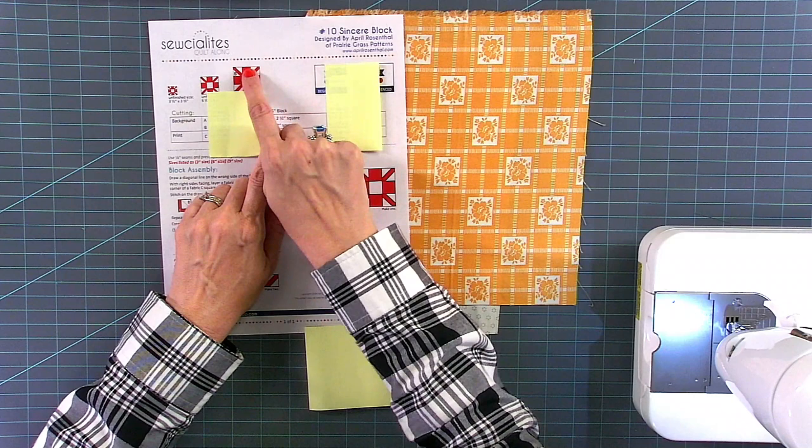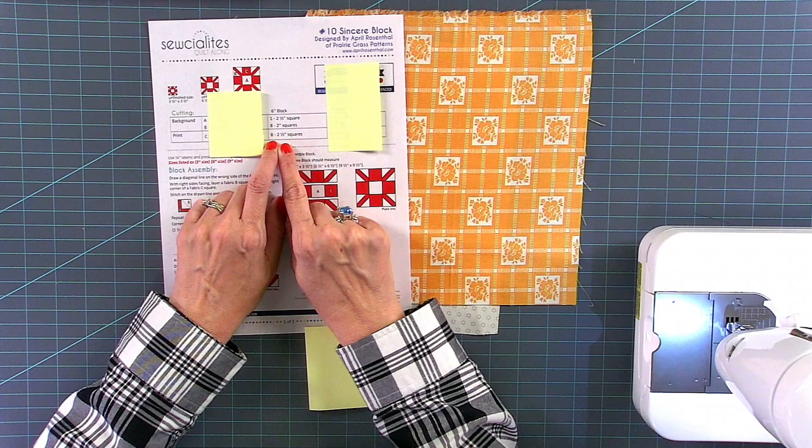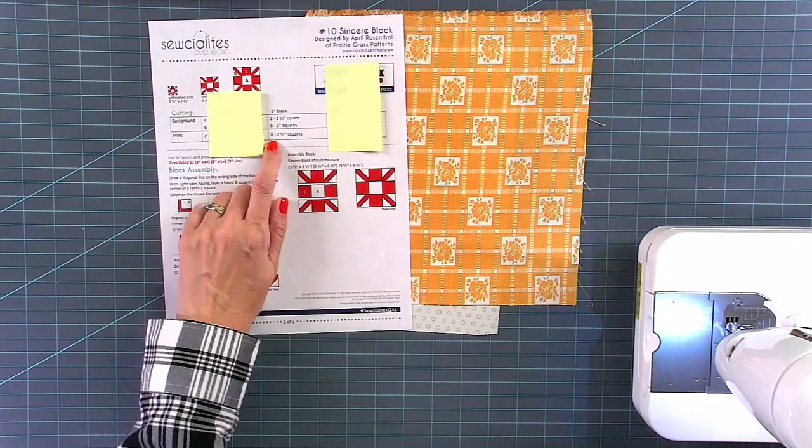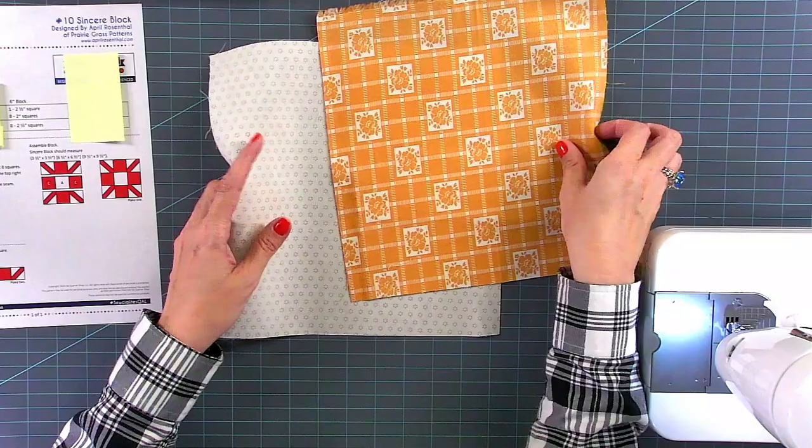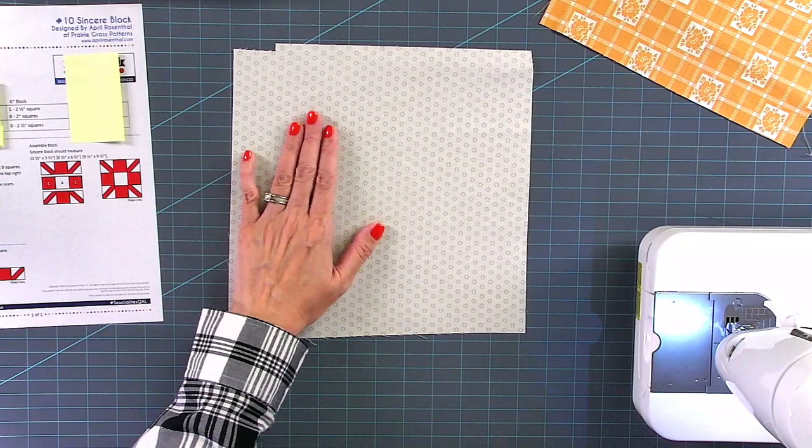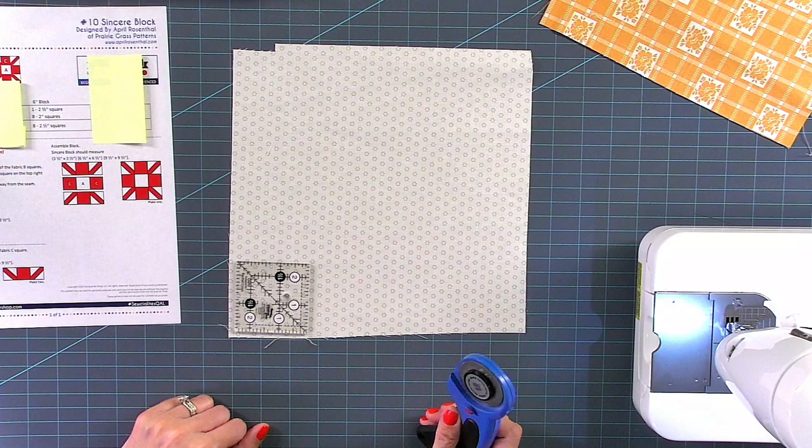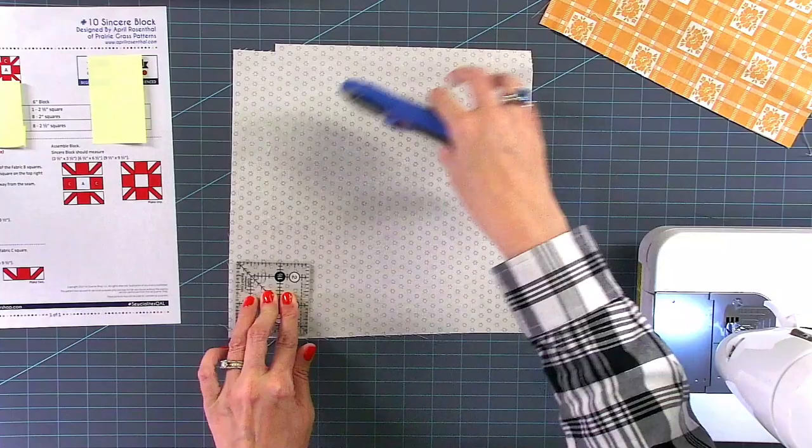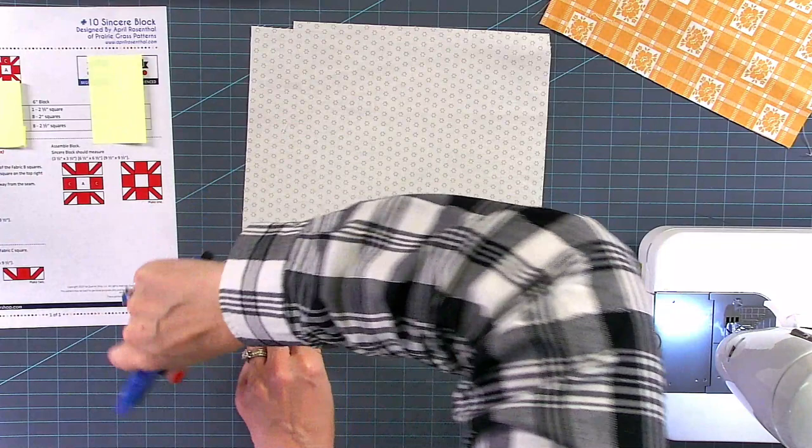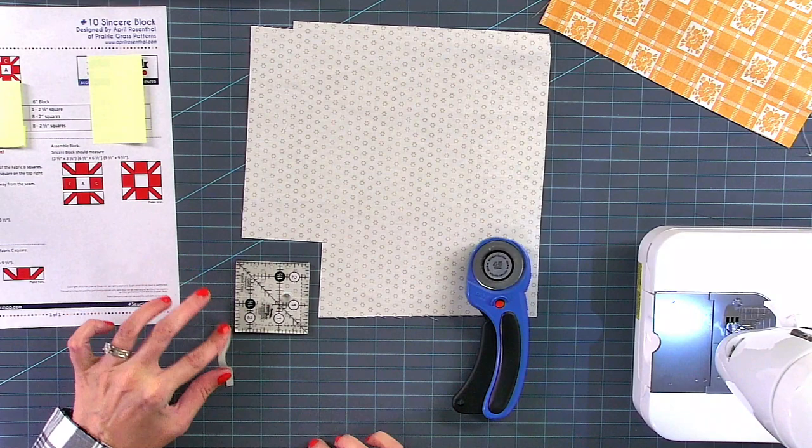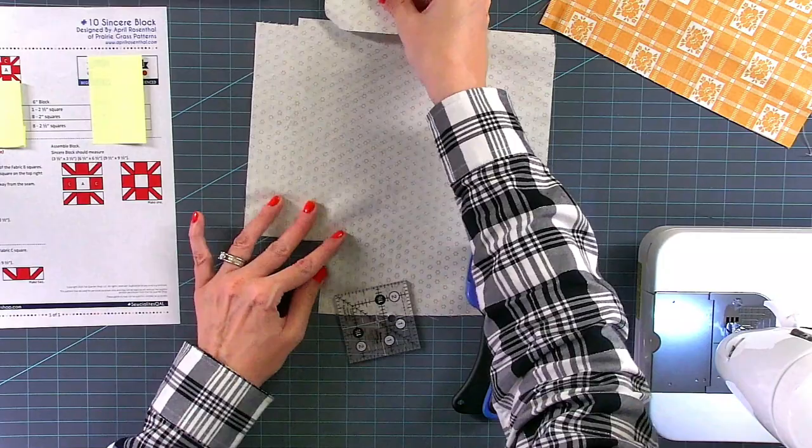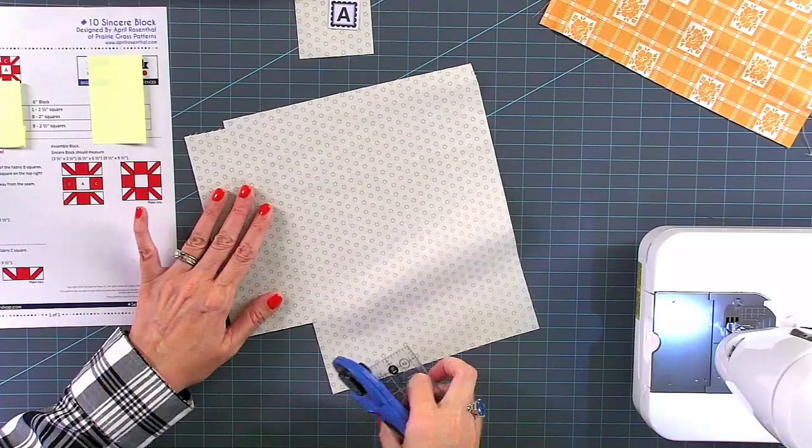So, I'm going to cover those up so I don't make any mistakes. With our background, we're going to cut one two-and-a-half-inch square and eight two-inch squares. That is going to be our white. Our print fabric is our orange, and we're going to cut eight two-and-a-half-inch squares. So, I'm just using scraps. I'm going to take a Creative Grids ruler. The first thing I will do is cut the two-and-a-half-inch square. So, that's A.